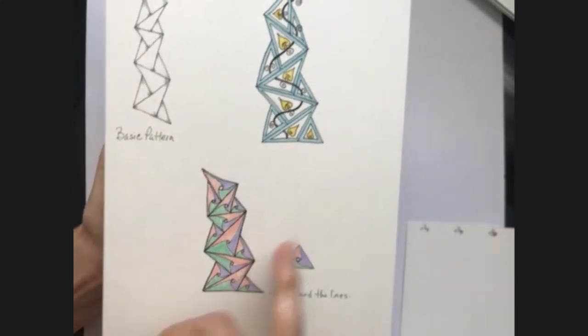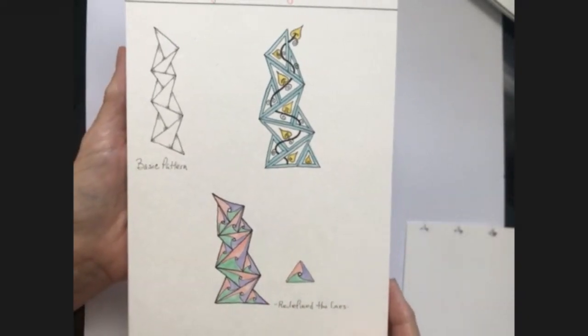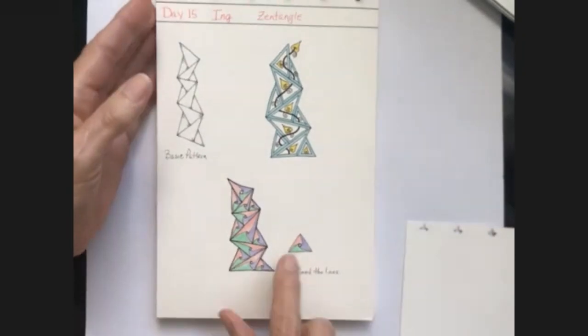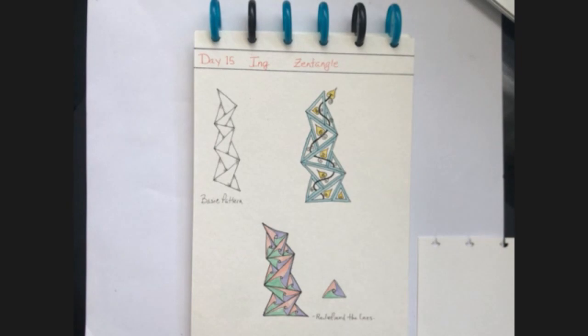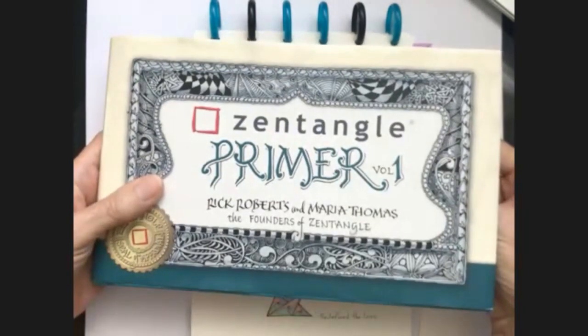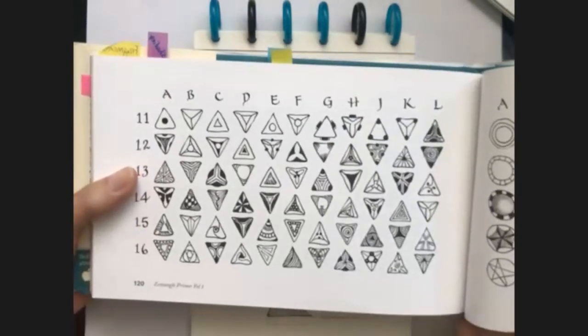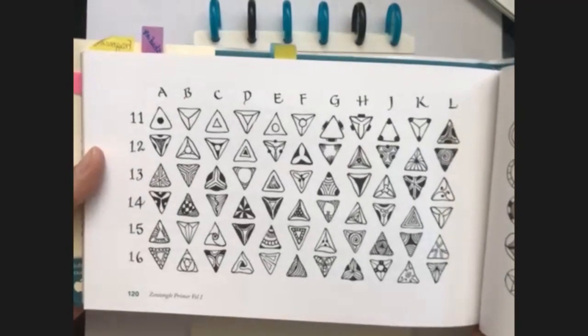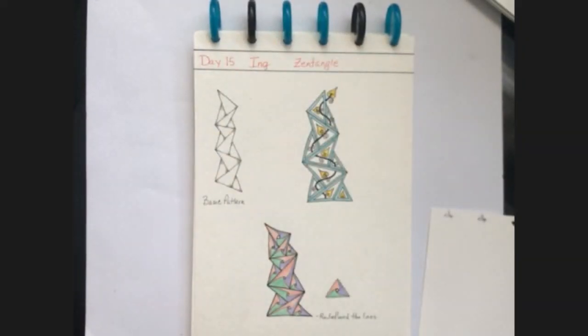And then this one I colored with watercolor brushes. The fun thing about this is that if you have the Zentangle primer, there is a section on fragments, and there are fragments for triangles. So you could fill those triangles with any one of those patterns.